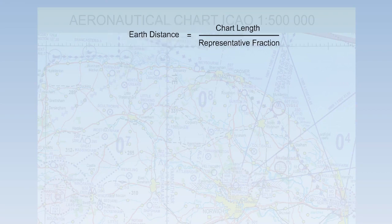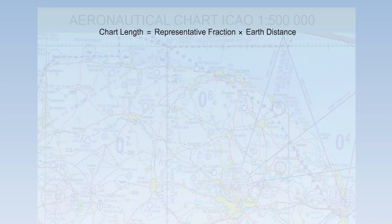In example 2, we were given the representative fraction and the chart length and asked to find the earth distance. In this one, example 3, we will do the third type. We'll find the chart length from the representative fraction and the earth distance.